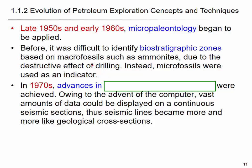Micropaleontology also began to be applied. Paleontology is about finding and analyzing fossils in sedimentary rock. From the fossils, you can determine where and when the sediments were deposited and how they were deposited. If you find fossils in an area, it means that area was abundant with organic carbon, giving you a better chance of finding hydrocarbons. Examples of microfossils include ammonites.